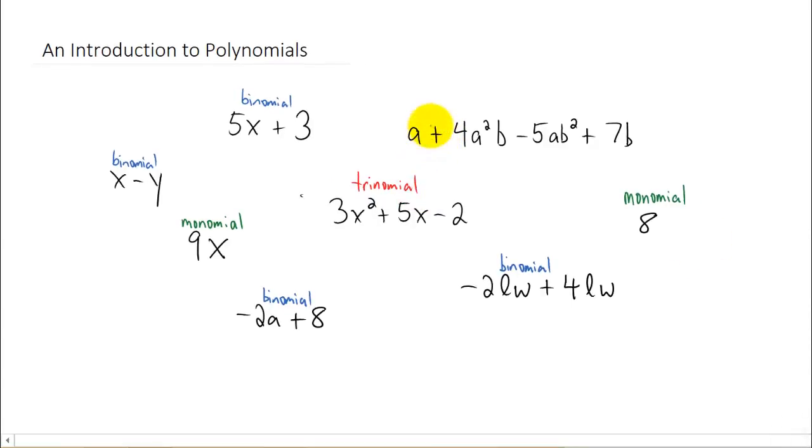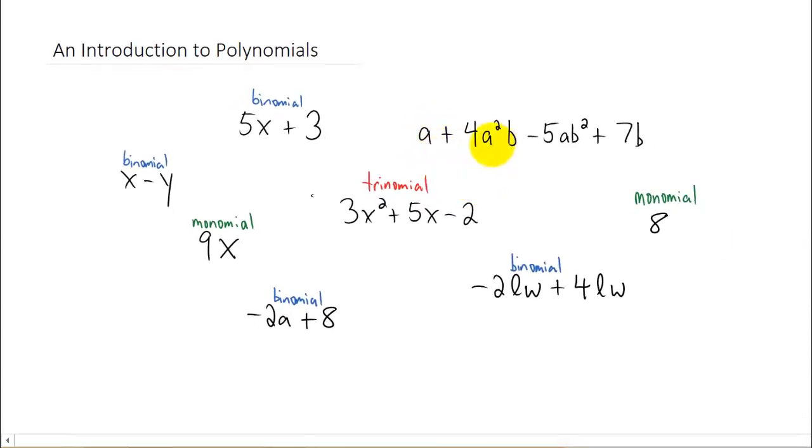If a polynomial has more than three terms, I don't know that we give it a special name. It's just a polynomial with four terms. You can have polynomials that have five terms, six terms, all the way up to an infinite number of terms.